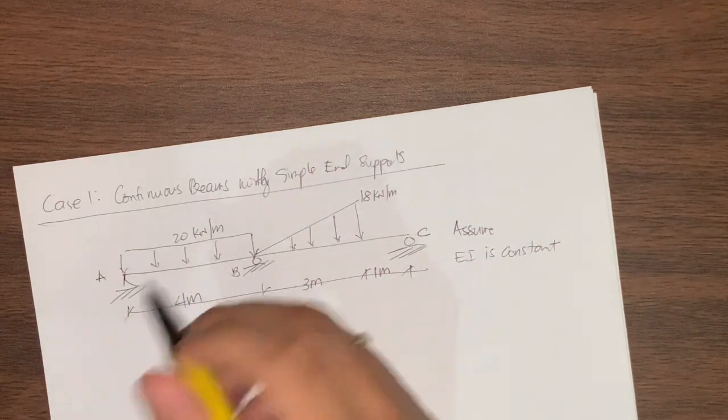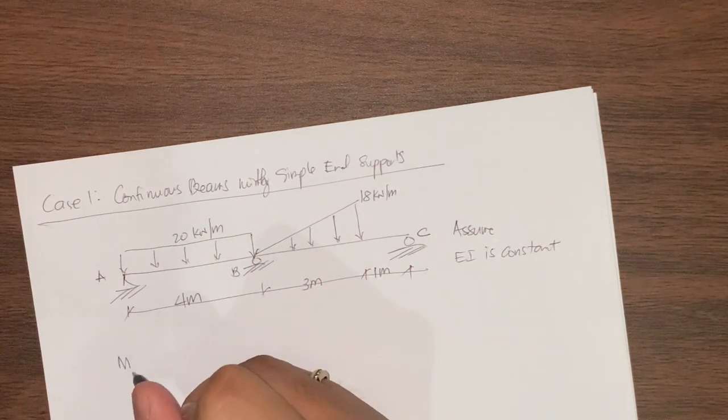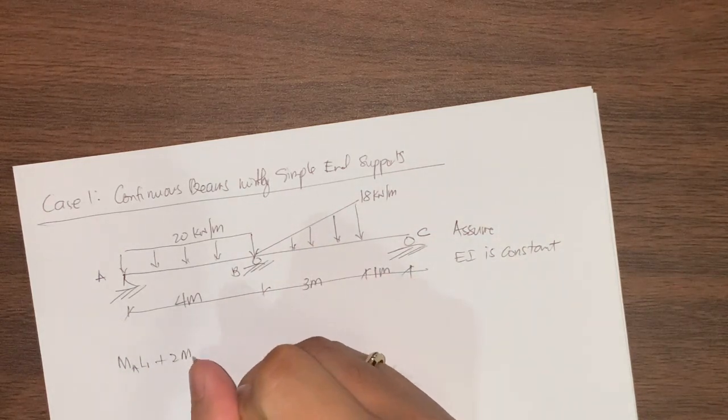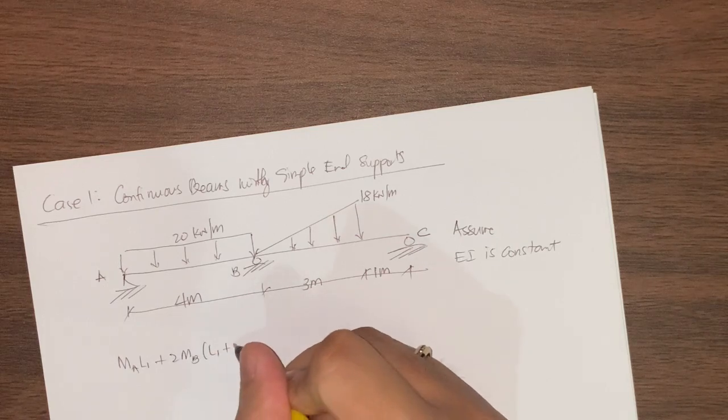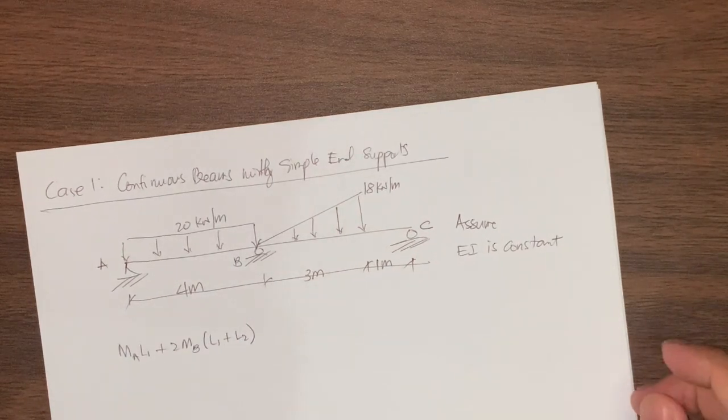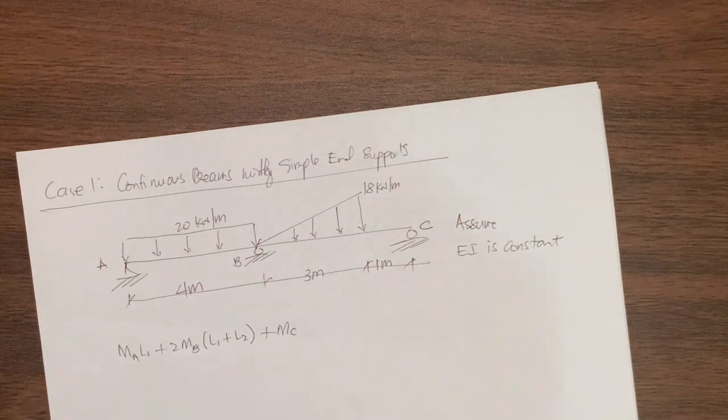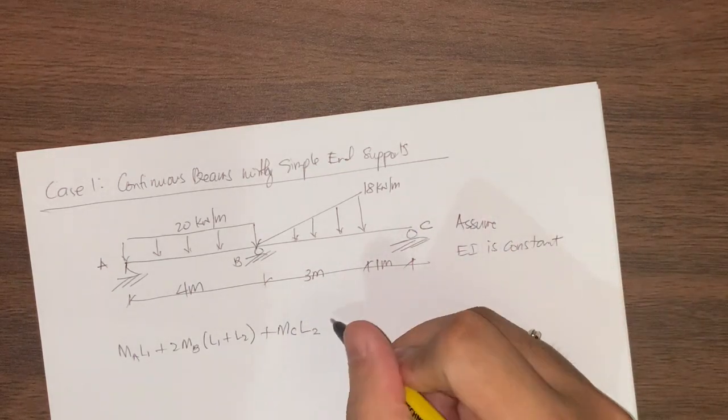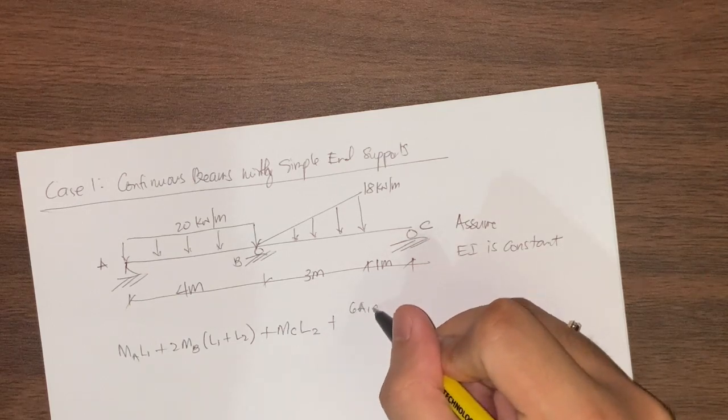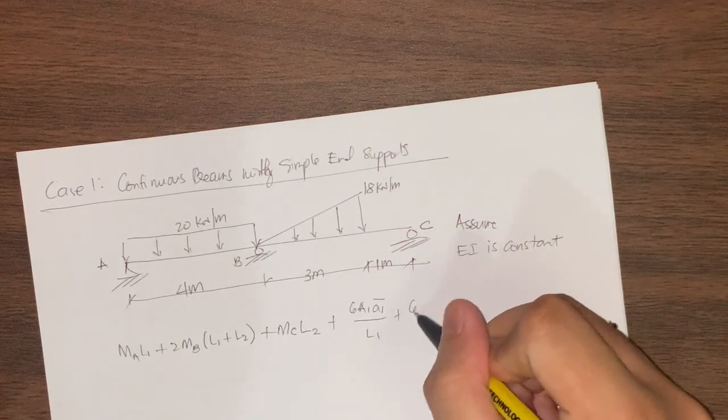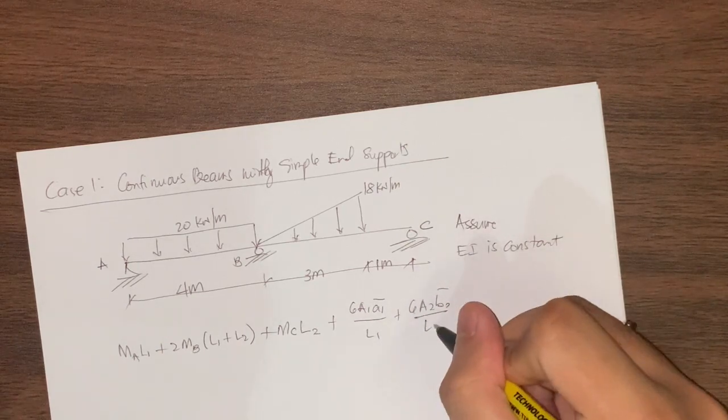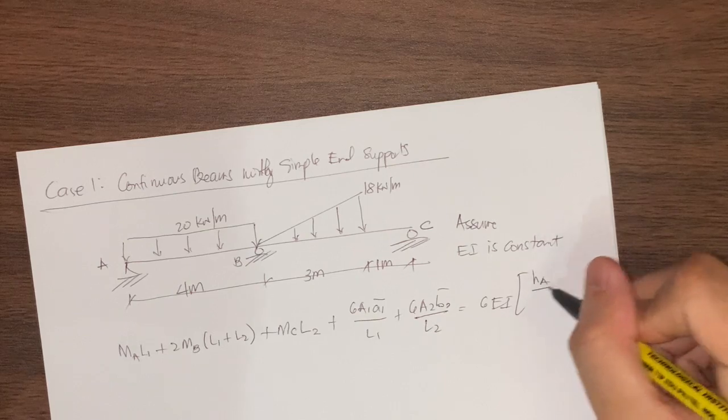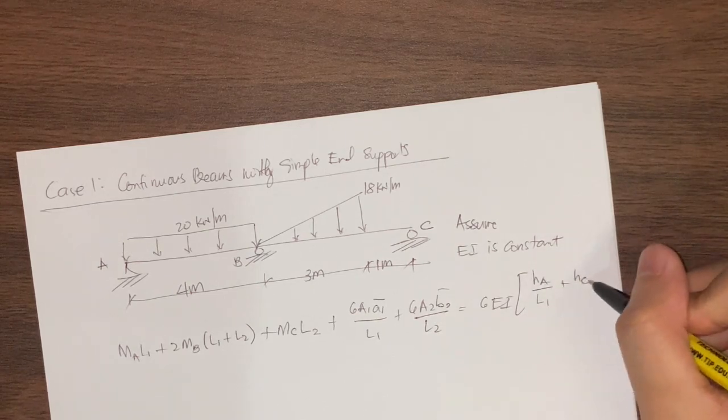The three-moment equation is: the moment at the left support multiplied by the length of the first span, plus twice the moment of the middle support multiplied by the sum of the length of the two spans, plus the moment at the third support multiplied by the length of the adjacent span. Then we have 6A1A1 bar over L1 plus 6A2B2 bar over L2 equals 6EI multiplied by HA over L1 plus HC over L2.